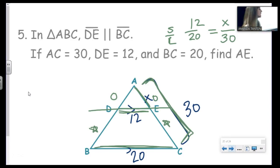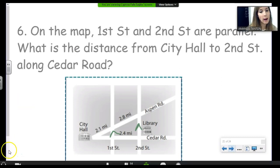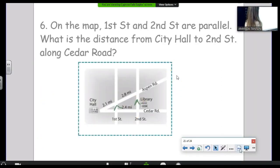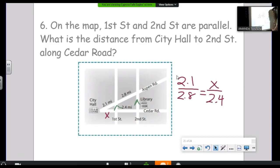Last problem. On the map, 1st Street and 2nd Street are parallel. Love some good old real world applications. What is the distance from City Hall to 2nd Street along Cedar Road? So if you're still logged in, I want you to try this one and private chat me. All right. So this one, we can use the triangle proportionality theorem. 2.1 is to 2.8 as X is to 2.4. The only caveat here is that when you find X, that is not the answer to the problem. So let's go ahead and find X. And you get 1.8.